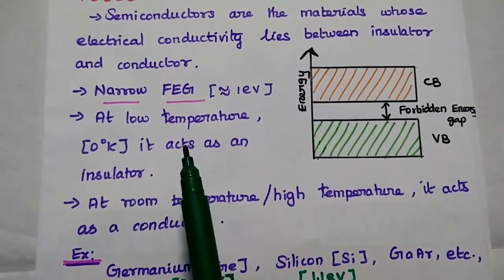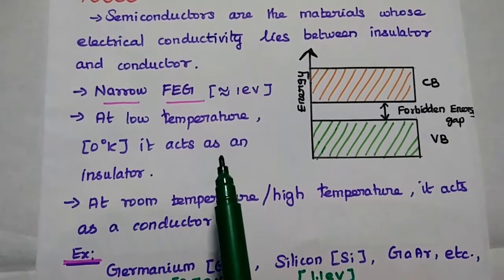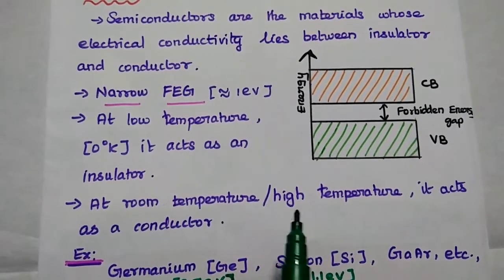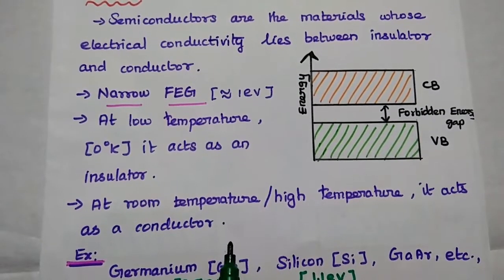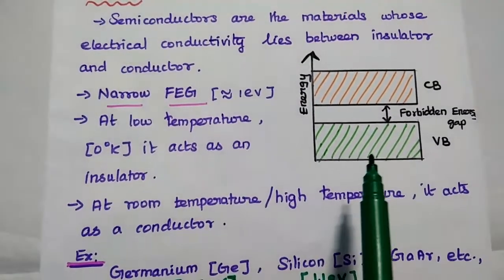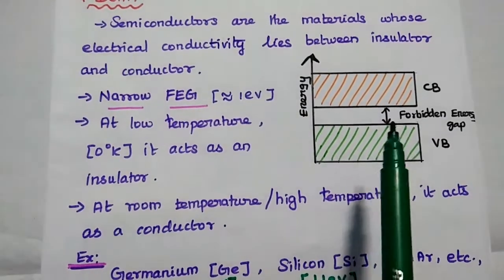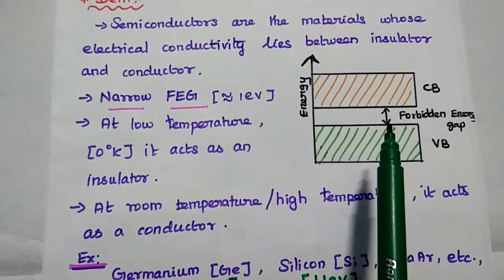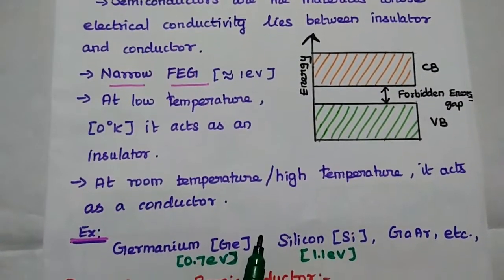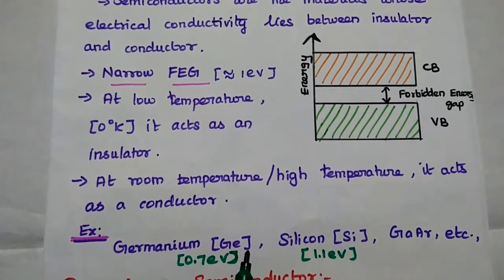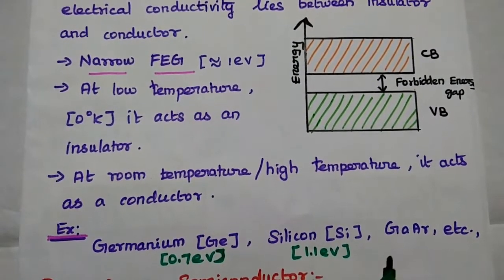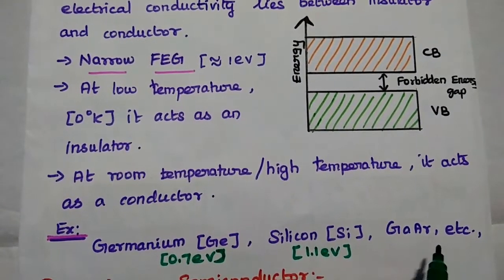At low temperature it acts as an insulator; at room temperature or high temperature, it acts as a conductor. This is the energy band diagram of the semiconductor — it has a very narrow forbidden energy gap. Examples of semiconductor materials are germanium, silicon, gallium arsenide, etc.